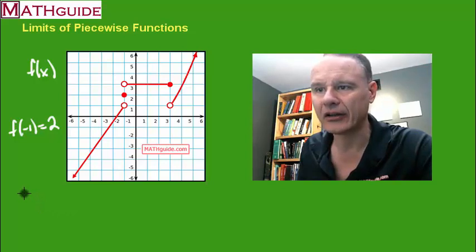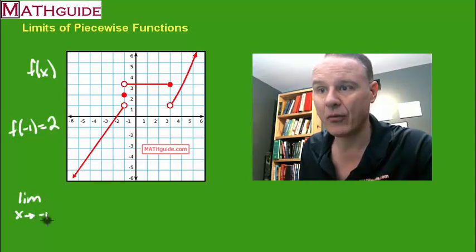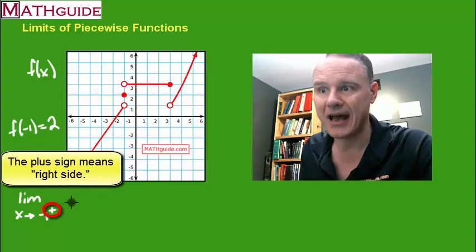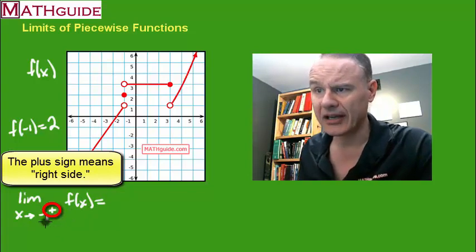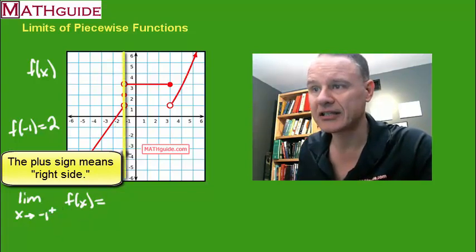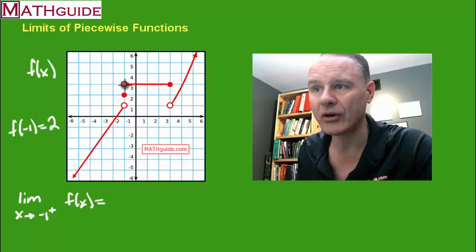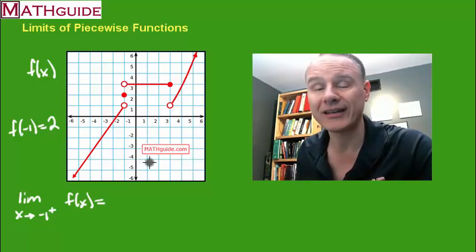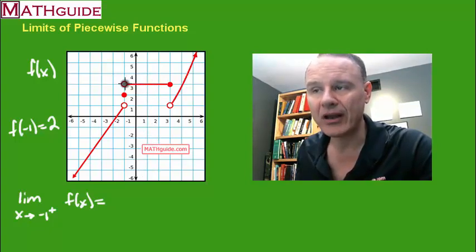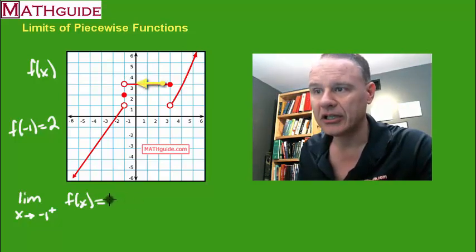Now let's take a look at how to calculate a limit. Let's say I want to find the limit as x approaches negative 1, but I want to approach it from the right side. Here's x equals negative 1 — I'm on the right side of it, so I must be on this section of the curve. As I get closer and closer to that x value of negative 1, I'm headed towards this point. Yes, that point does not exist on the graph, but that's where I'm headed, and that point has a y value equal to 3.